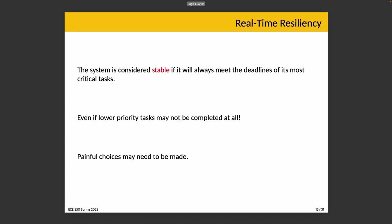So what do we do then? In a real-time system, it is considered stable in the technical definition if, when we have reduced capacity, it will always meet the deadlines of the most critical tasks, even if some of the lower priority tasks do not get completed. Painful choices may need to be made, but the most important things will still be prioritized — there exists a hierarchy of what's most important, and that is respected. If we have enough capacity still to do all the most critical things, we would say the system is stable.